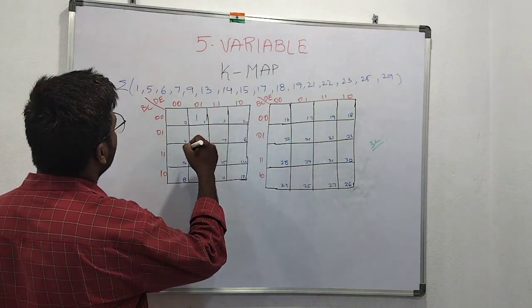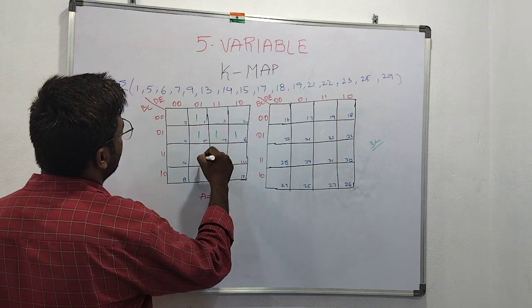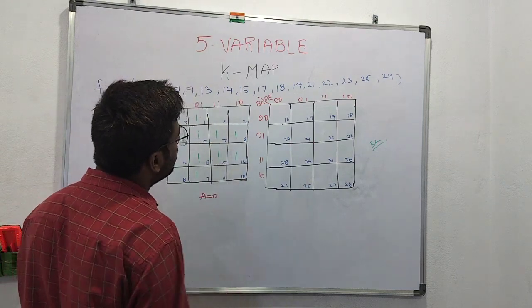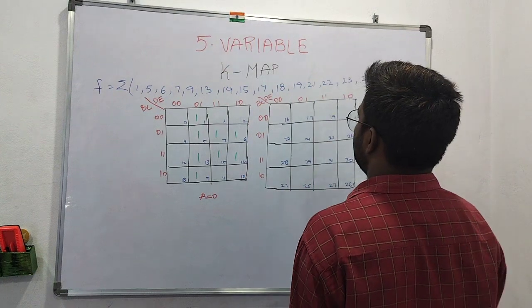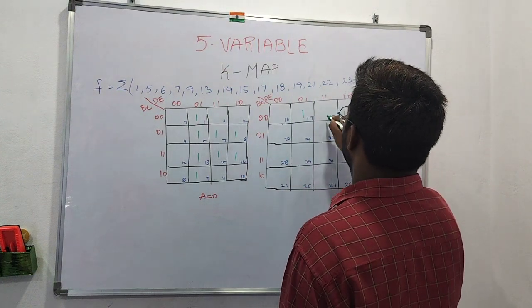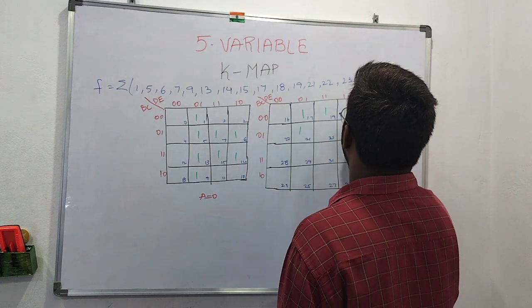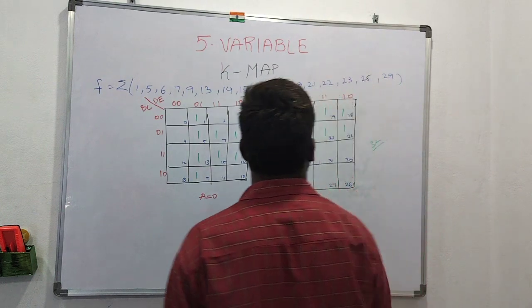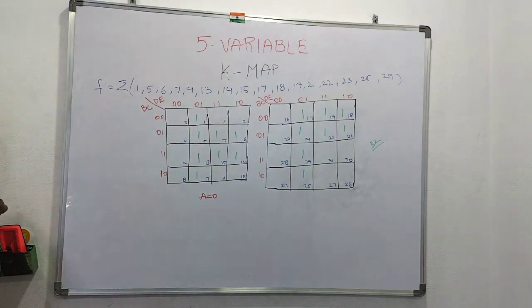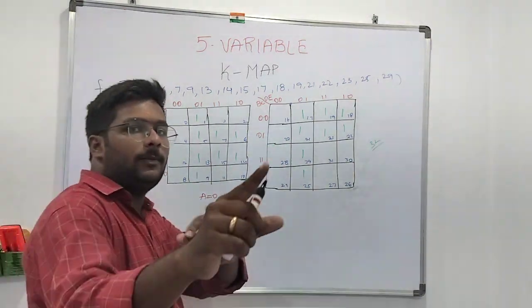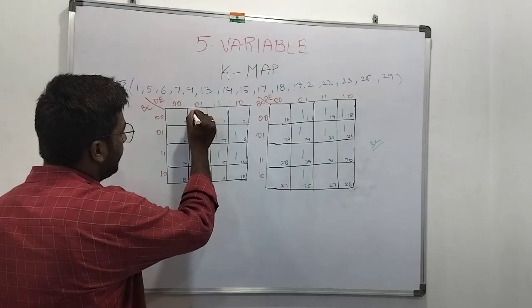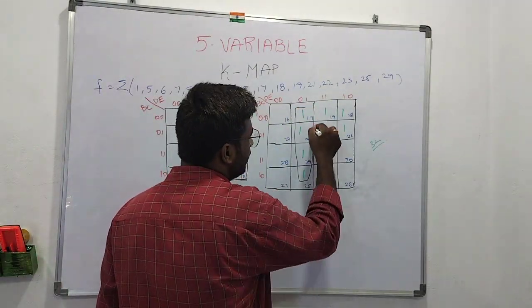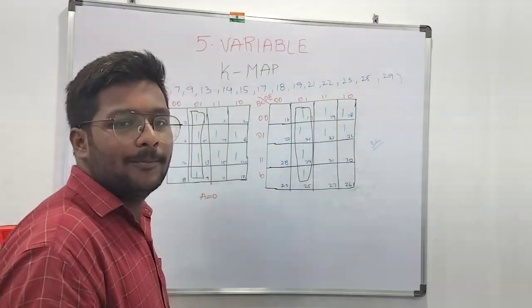The minterms for this question are: 1, 5, 6, 7, 9, 13, 14, 15, 17, 18, 19, 21, 22, 23, 25, and 29. Now let's go into the mapping — how to prepare it and how to solve it.